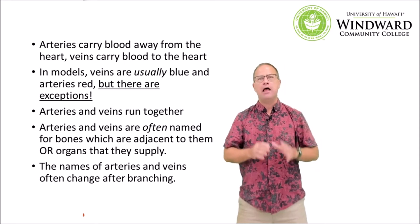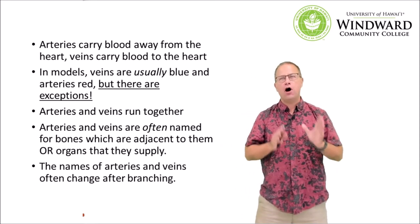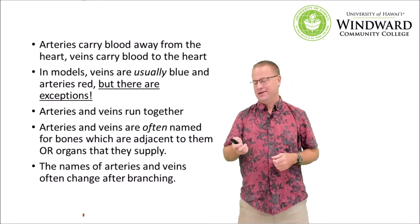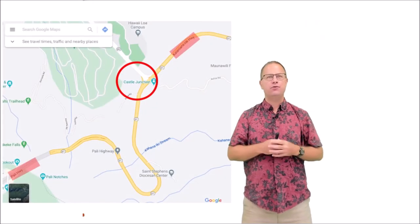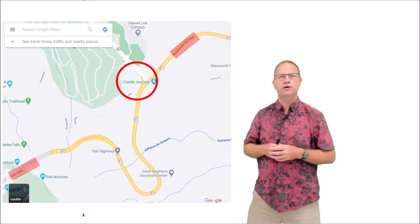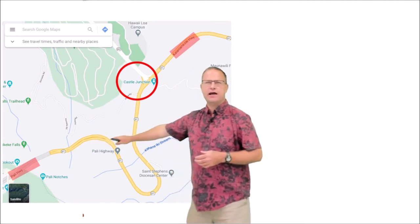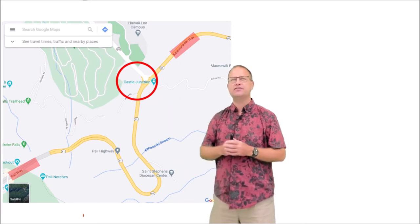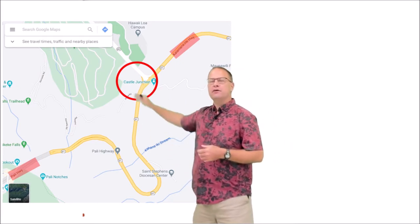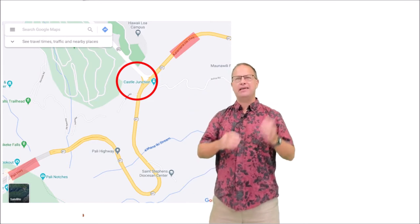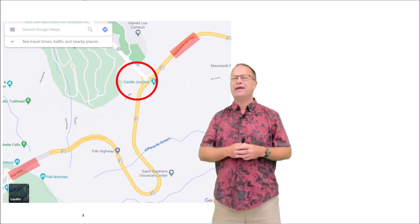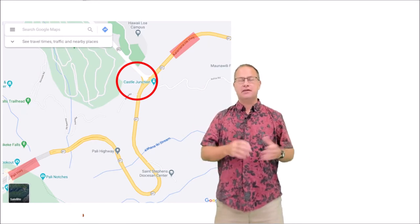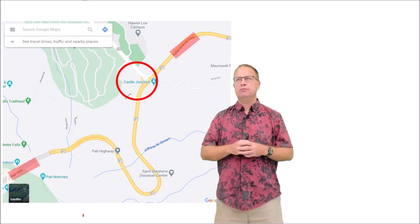The maddening thing is that the names of arteries and veins often change after those arteries branch, and these blood vessels branch a whole lot. Here's an analogy: on the windward side of Oahu, the Pali Highway travels across the mountains, and once it reaches Castle Junction it meets up with Kamehameha Highway and ceases to be Pali Highway — beyond that it becomes Kalaanianaole Highway, then Kailua Road. It's very maddening because names do change, and it's the same concept with blood vessels.